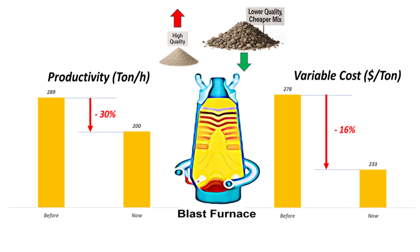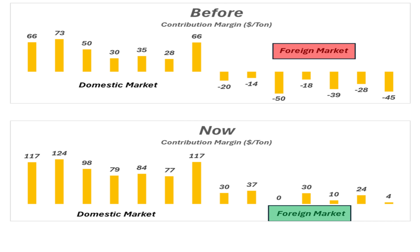That 16% cost reduction was the key. When you lower the variable cost of making iron by 16%, that cost reduction flows through to every single product DemoSteel makes — even the export products. That 16% cost saving was enough to push all the products, including those foreign market ones that had negative CM, back into positive territory. Suddenly, even the export products had a positive contribution margin again — they weren't losing money on them anymore.